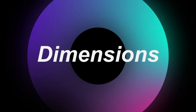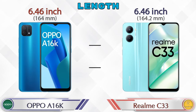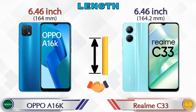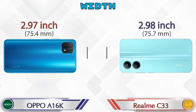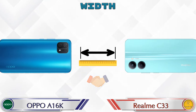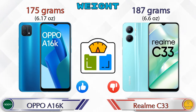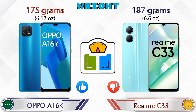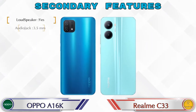Now let's check the details about dimensions. The length of both phones is the same at 6.46 inches. Width: the A16k is 2.97 inches and the Realme C33 is 2.98 inches, which are almost the same. Talking about weight, the A16k is 175 grams and the Realme C33 is 187 grams, which is heavier than the A16k.